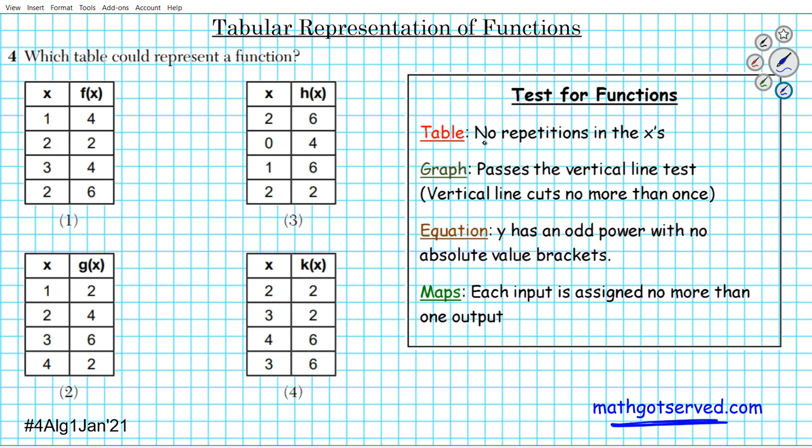If you're given a table, the test is you need to have no repetition in the X's. If you're given a graph, the graph has to pass the vertical line test - basically, when you run a vertical line through the entire graph, it cuts no more than once. If you're given an equation, y has an odd power with no absolute value brackets.